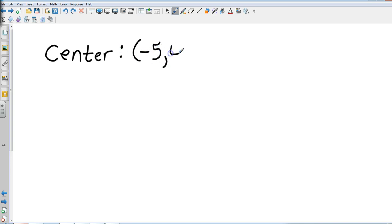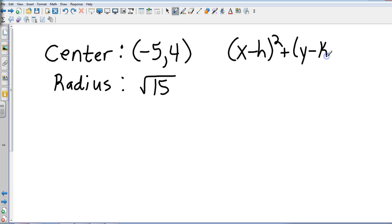Let's take a center of, let's just make one up here, let's call it negative 5, 4, and let's say the radius is, let's go crazy here and say it's the square root of 15. So over here I'm going to have my circle formula x minus h squared plus y minus k squared equals r squared. Now I can identify h and k right away. h is negative 5 and k is 4, and then my radius is the square root of 15.